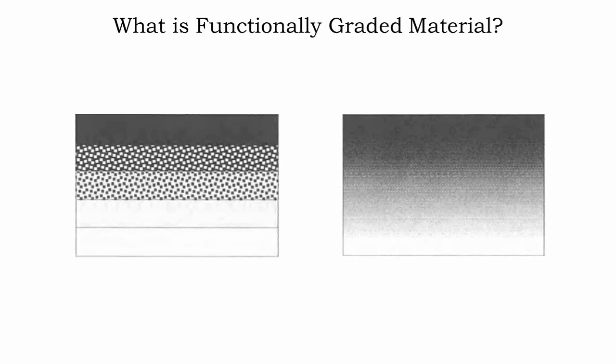The introduction of functionally graded material was a result of the failure of the traditional composite material when used in harsh working environments. The failure of these traditional composite materials occurred along the distinct, well-defined interface that exists between the laminated composite materials. If we look at the picture given on the left, there are very clear boundaries between the layers.